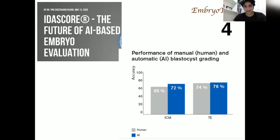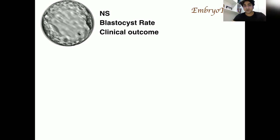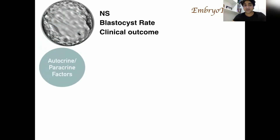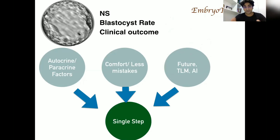The fourth important point is that artificial intelligence and time-lapse imaging represent the future of embryo culture, and it is very difficult to use sequential media in time-lapse systems, making single step the advised choice. In summary, there is no significant difference in blastocyst rate or clinical outcome between single step and sequential media. But considering autocrine and paracrine factors, ease of use, and the future of AI-based culture systems, single step is the preferred choice. If your lab is using both and getting comparable outcomes, I would advise switching to single step.